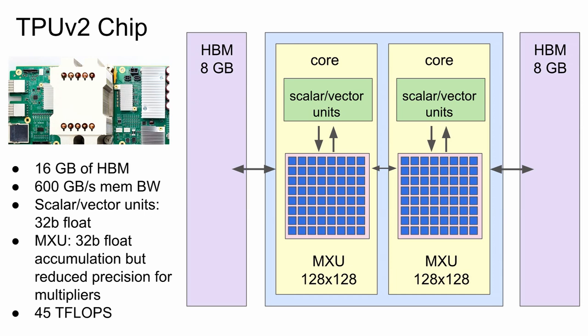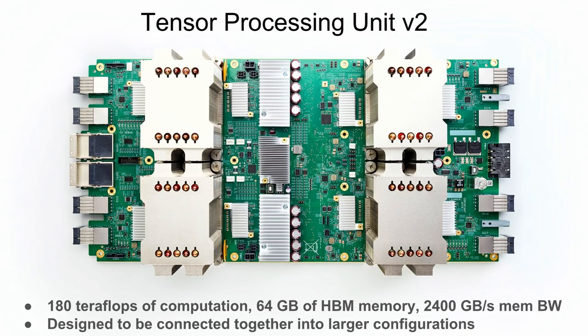One chip gives you 45 teraflops of compute. The whole device gives you four times that—180 teraflops—with two and a half terabytes per second of memory bandwidth.